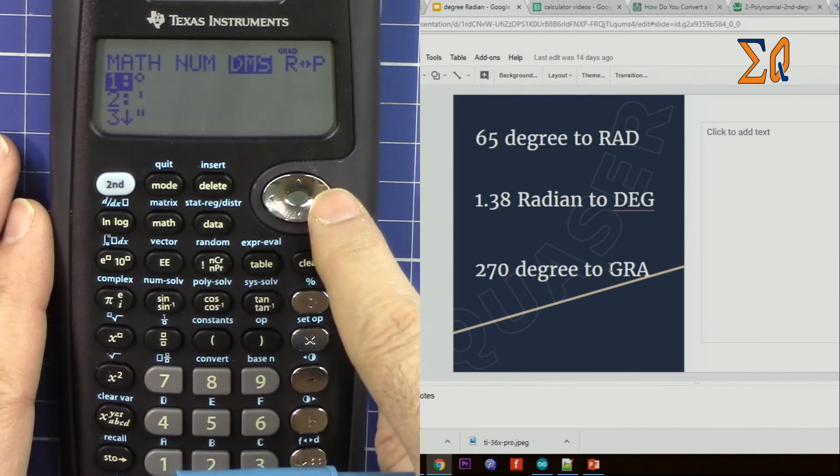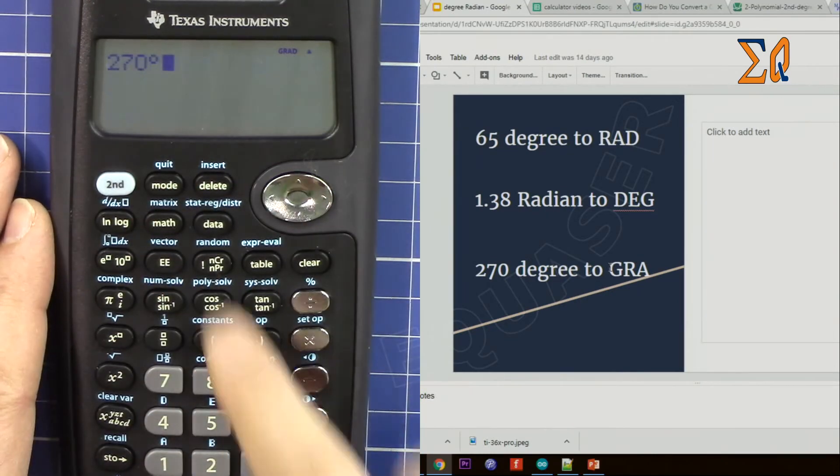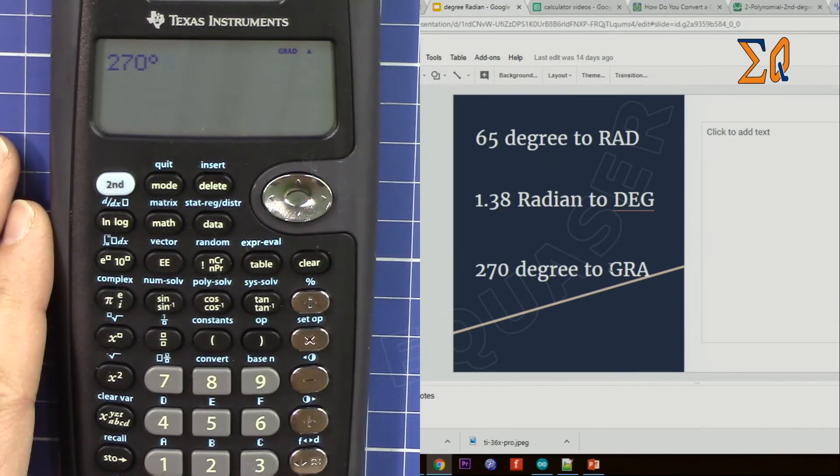One is okay, so degree to gradient is selected. Just press equal and it's 300 gradient.